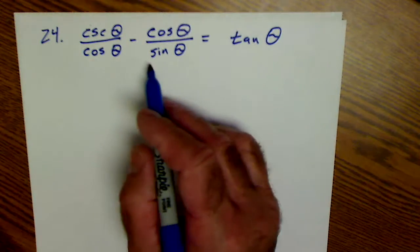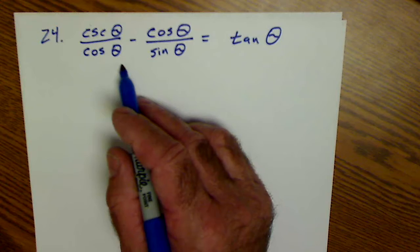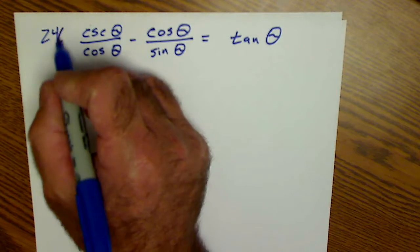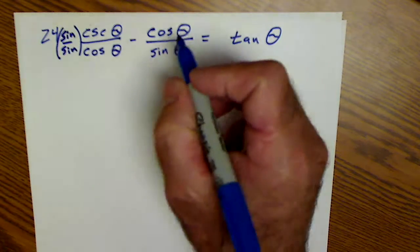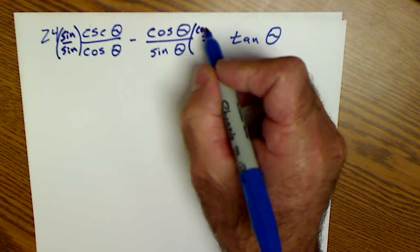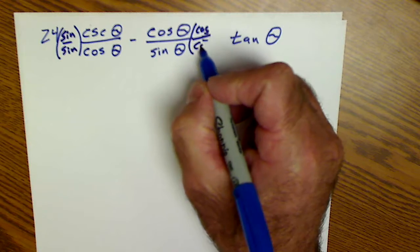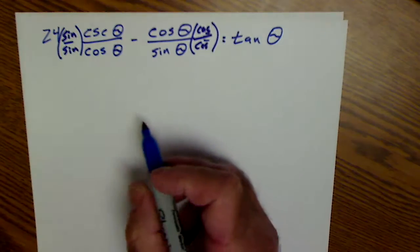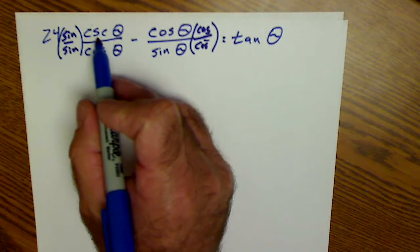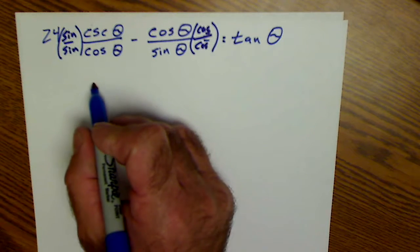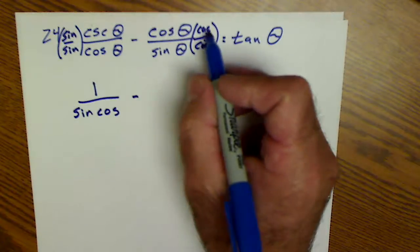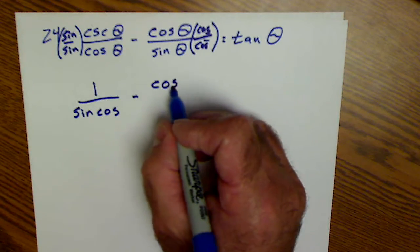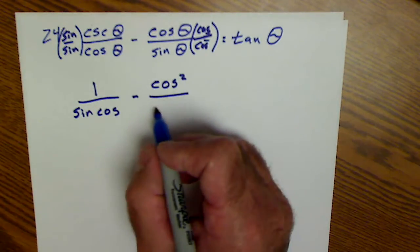I have fractions with different denominators, so I need a common denominator. So I'm going to multiply this side by sine over sine and this by cosine over cosine. And that's going to give me sine times cosecant, that's a reciprocal of 1 over sine of theta cosine of theta, minus cosine times cosine. Cosine squared of theta all over sine cosine.